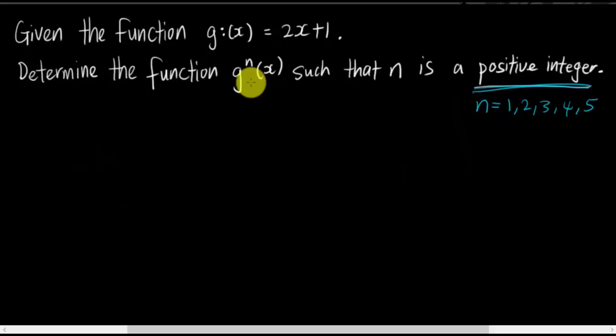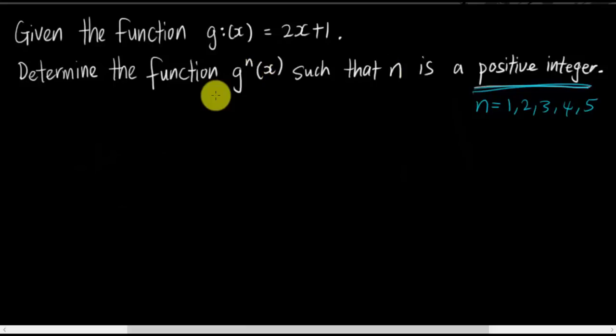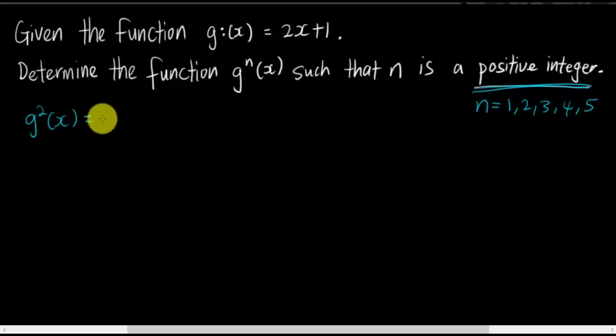What is g^n(x) in terms of n — something like you have to write the formula for g(x) in terms of n. So let's try to see how to do this kind of question. The first thing is I try to do g²(x), which we know equals g(g(x)).